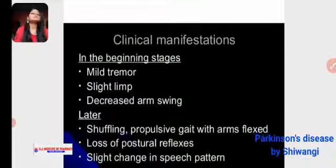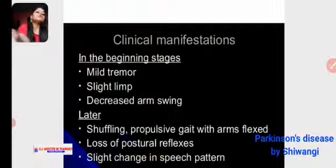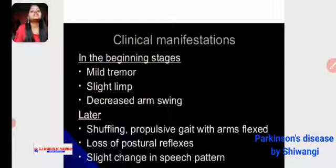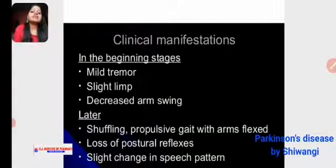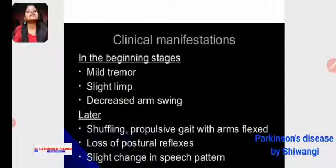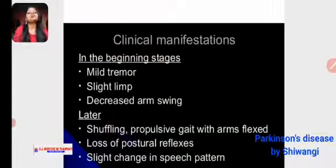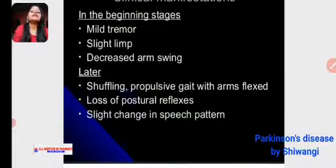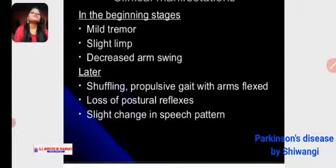Now clinical manifestations. In the beginning stage, symptoms are mild: tremor, slight limp, or decreased arm swings. Over a long time, shuffling will progress, with the arm flexed and slight changes in speech pattern.